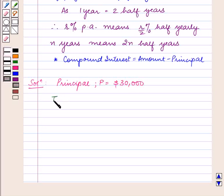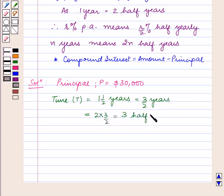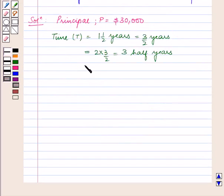The time T = 1.5 years = 3/2 years. That will be equal to 2 × 3/2 = 3 half years. So, we have N = 3 half years.